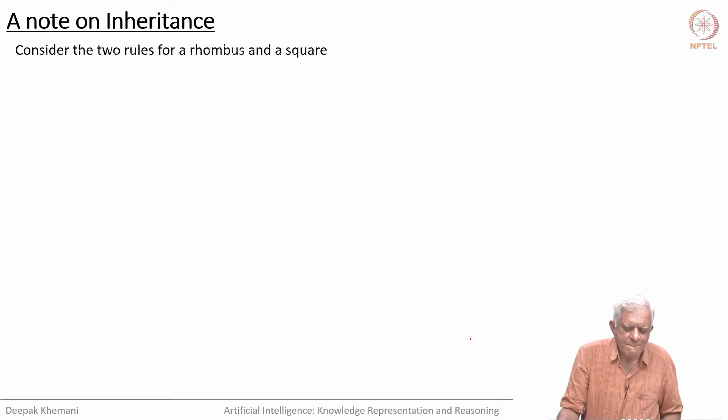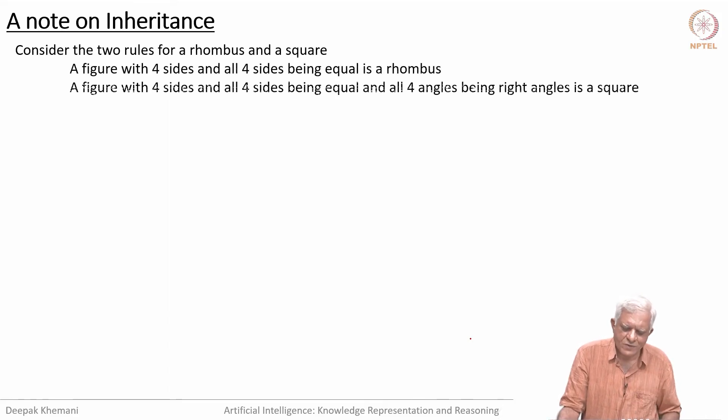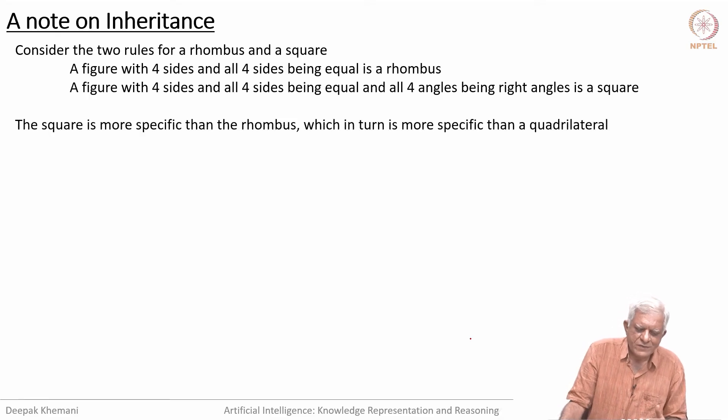A note on inheritance. We have seen that some things are more general than other things. For example, look at the rhombus and look at the square. A figure with four sides and four sides being equal is a rhombus. Then you can say that a rhombus in which the angle is 90 degrees is a square. You can see that if you have described a rhombus, you can describe a square as a specialization of the rhombus which has angle 90 degrees. You can inherit the rest of the properties and just add something new. That kind of stuff happens a lot when people build things like taxonomies.